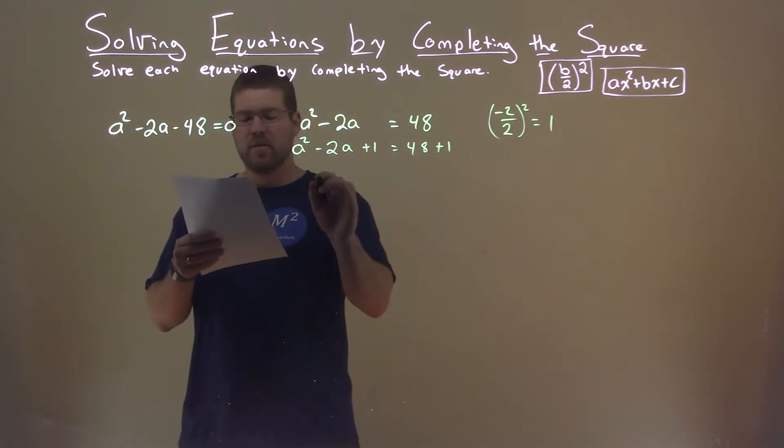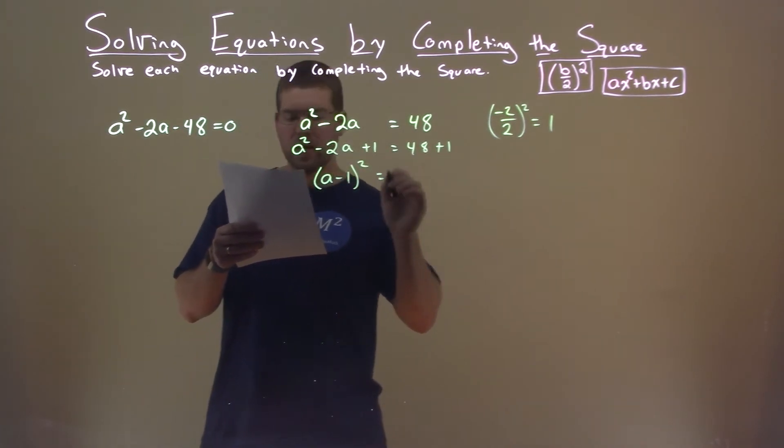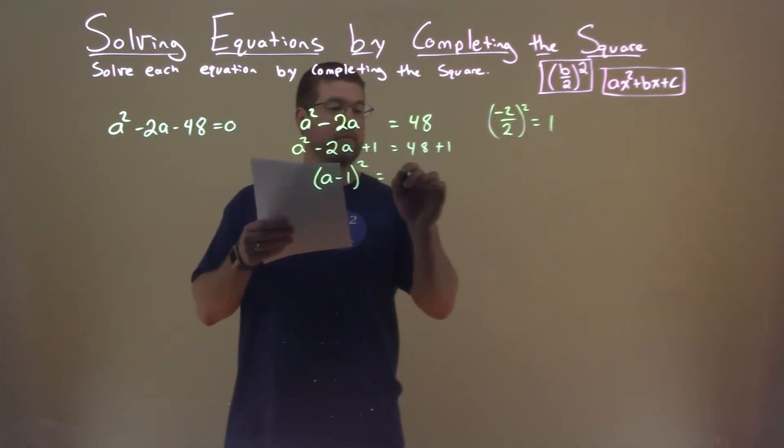The left-hand side now is a perfect square. a minus 1 squared equals 48 plus 1, which is 49.